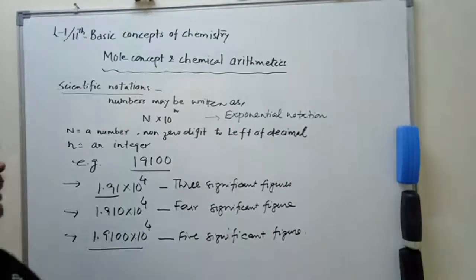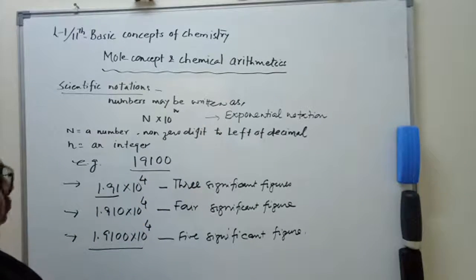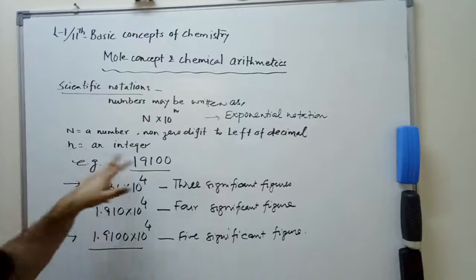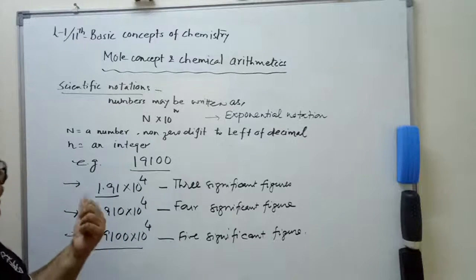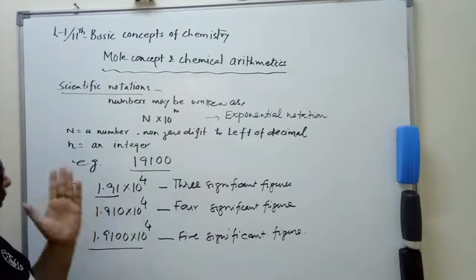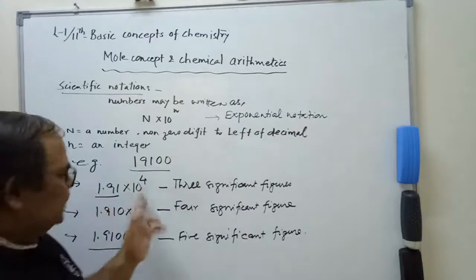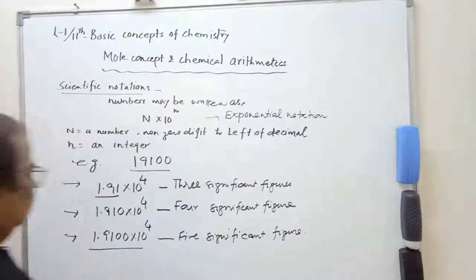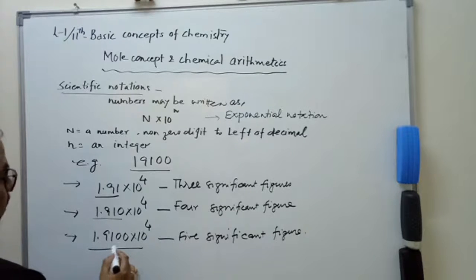So the basic answer: the first head in mole concepts and chemical mathematics is scientific notation. A number can be written as N into 10 to the power n — this is exponential notation, also known as scientific notation. N is a non-zero digit to the left of the decimal, and n is an integer. One more important thing: the exponential term is never considered in the significant figure. This is very important. This can be written as 1.910 — giving 4 significant figures.